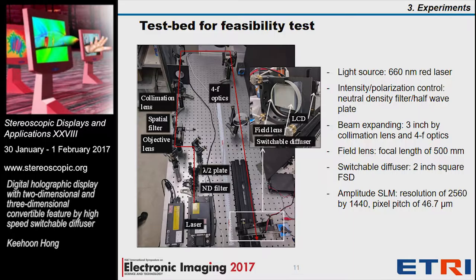We built a test-bed system to test the feasibility of our proposed method. Starting from coherent light, we used a laser of 660 nanometer red color and an ND filter. A half-wave plate is used for intensity and polarization control of the light, along with a collimation lens with spatial filter and objective lens. Additional 4F optics is used to expand the beam size to 3 inches. A field lens for the holographic projection configuration, switchable diffuser, and SLM are arranged as shown in the inset figure. We use an amplitude modulation type LCD for the SLM, with a resolution of 2K and a pixel pitch of around 46 µm.